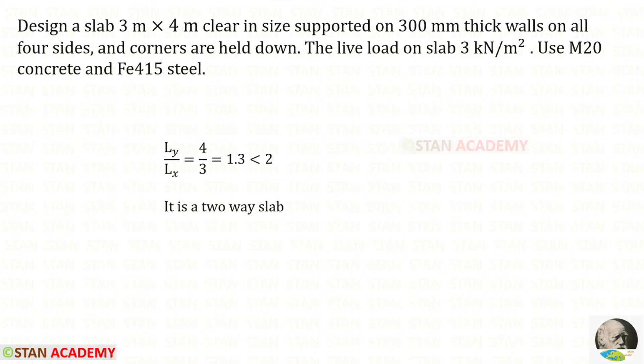First we have to check whether it is a one-way or a two-way slab. LY upon LX gives 1.3, which is less than 2. In this case it is a two-way slab.